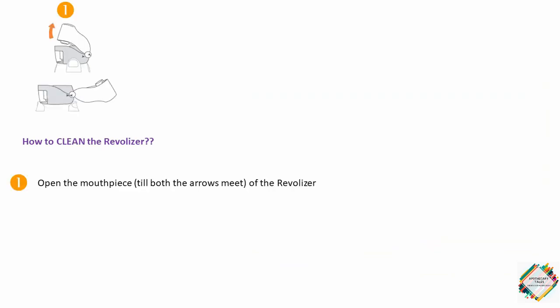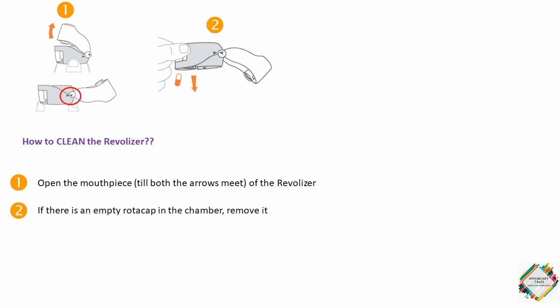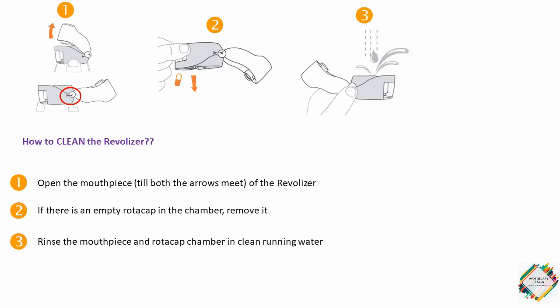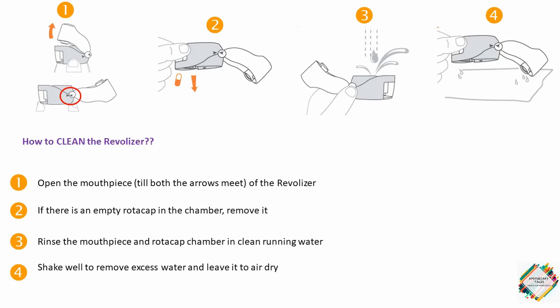To clean the Revolizer: open the mouthpiece until both arrows meet and remove any empty Rotacap. Rinse the mouthpiece and Rotacap chamber in clean running water. Shake well to remove excess water and leave it to air dry.